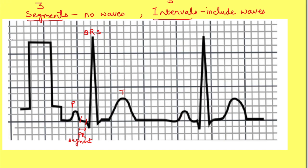PR segment represents the AV nodal pause — during this time the atria are depolarized but the ventricles are at resting membrane potential. ST segment is from the end of the QRS complex to the beginning of the T wave, with no wave in between. During the ST segment, ventricles are depolarized and no current is flowing through the heart. TP segment is from the end of the T wave of one recording to the P wave of the next impulse recording.